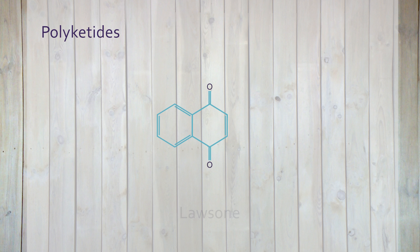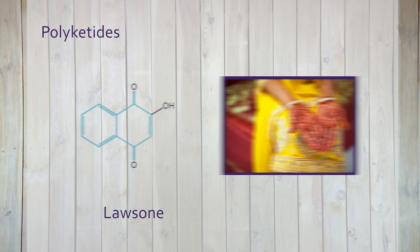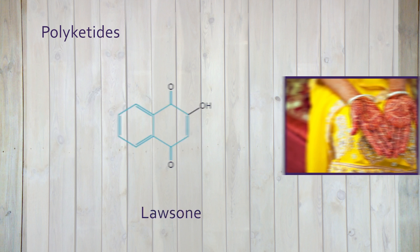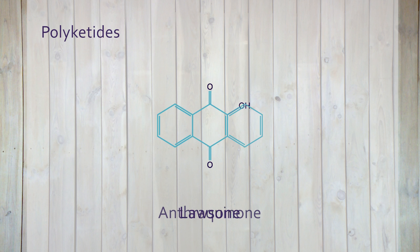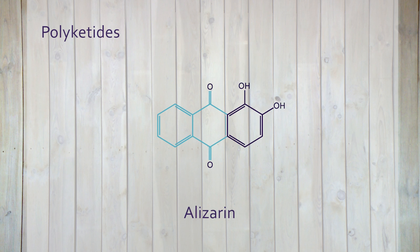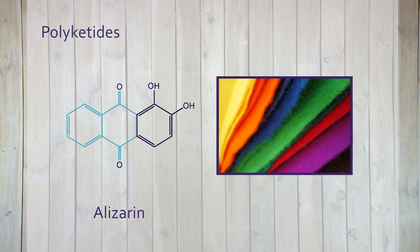Naphthoquinone, such as lawsone, is known for making henna tattoos. Another example of quinones is anthraquinone, such as alizarin, isolated from the root of Rubia tinctorum, which is used as a textile dye.